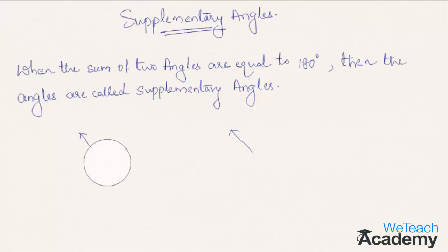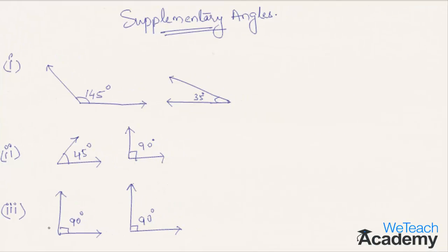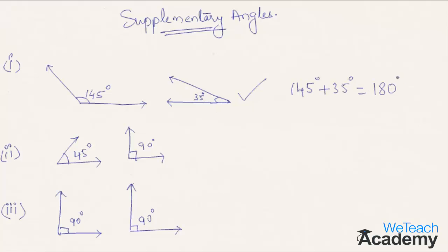Let us consider a few more examples and find which ones are supplementary angles. For the first pair, these are supplementary angles since the sum of these angles is 145 plus 35, which equals 180 degrees. Hence they are supplementary angles.